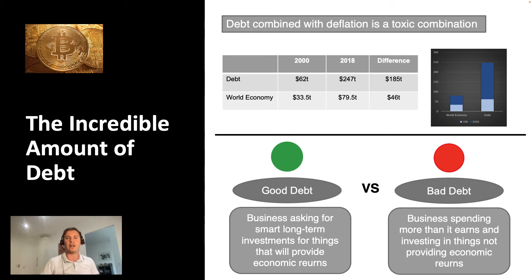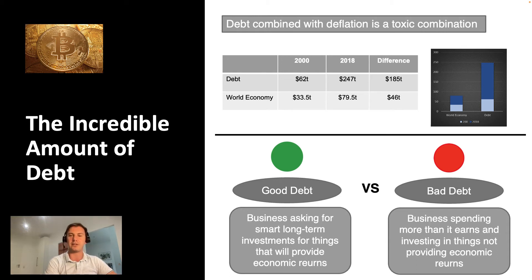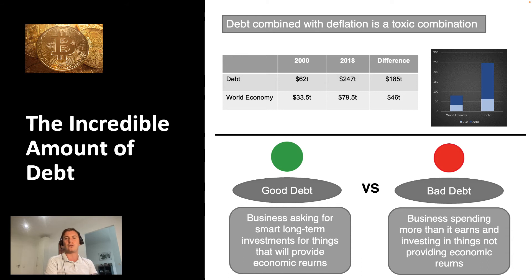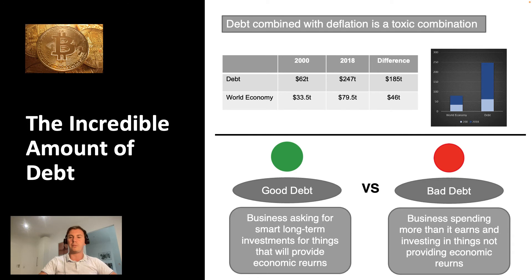Debt is not only bad — it can be used wisely to fund smart long-term investments. A business that takes on debt to invest in automation gains leverage against competitors and can pay back that debt with better returns in the future. Credit and debt should remain in society, but only as good debt. Bad debt is when a business spends more than it earns or invests in things that don't provide economic return.